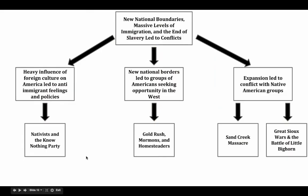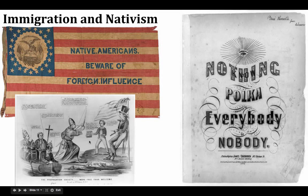We also see lots of conflict happening as a result of all these new national boundaries, massive levels of immigration, and eventually the end of slavery — all creating conflict as well. Large-scale Irish immigration as a result of the potato famine leads to high levels of xenophobia — fear of foreigners — and nativist groups gaining traction and power in American politics. There's even a party called the Know-Nothing Party that arose in the 1850s, basically addressing the fears that native-born Americans had of foreign influence.